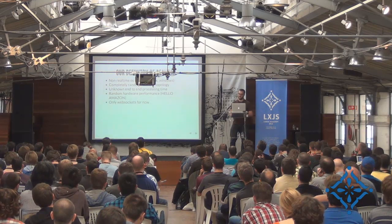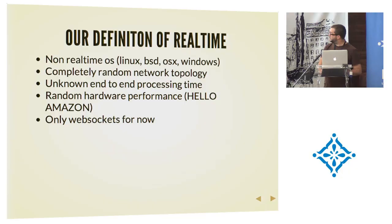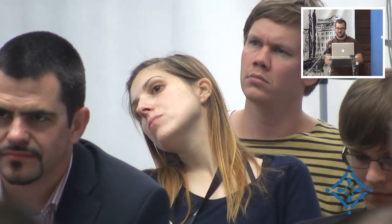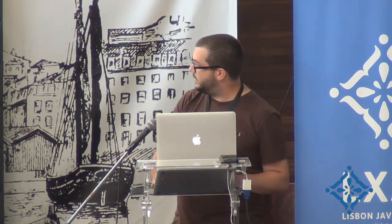Our definition of real-time is something like this: a non-real-time OS — Linux, PC, OSX, or Windows — where your process might take 100 milliseconds or 500 milliseconds depending on what's going on in the operating system. Completely random network topologies with unknown latencies, completely unknown end-to-end processing times with huge variations between messages, completely random hardware performance — shout-out to Amazon because they definitely have this issue with instances performing well for a period and really slow for another. In the browser, we're really only looking at WebSockets as a proper protocol right now, and we're going to touch on why that is somewhat limiting.